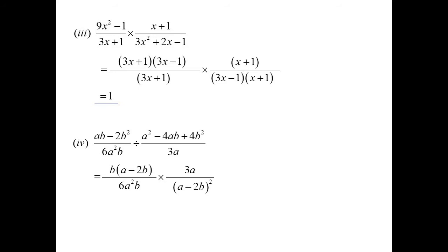Now the 3a and the 6a squared b will stay as they are. Which one would I have done first? ab minus 2b squared or the quadratic? What do you reckon? And I agree. That's what I would have done first too. That's just got a common factor.